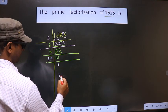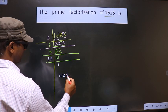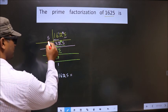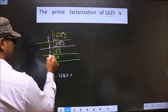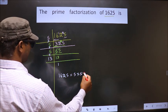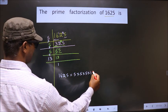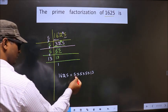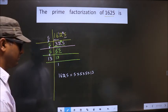So, prime factorization of 1625 is, you put into symbol between them. That is 5 into 5 into 5 into 13. This is the prime factorization of 1625.